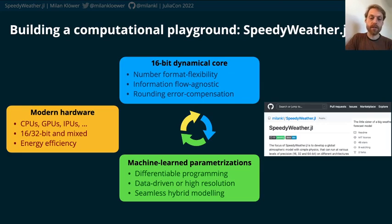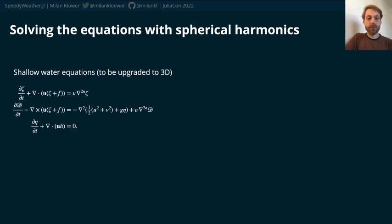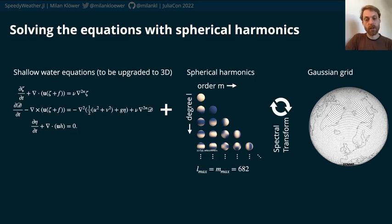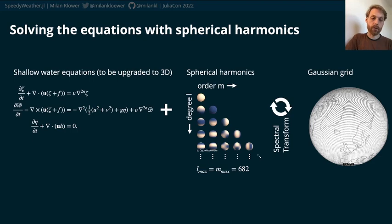At the moment, SpeedyWeather.jl solves the shallow water equations, which will soon be upgraded to 3D. We combine this with spherical harmonics — the spectral space — using these basis functions, going up to around 700 of them, which form a lower triangular matrix of complex coefficients. On every timestep you do a spectral transform between the spherical harmonic space and the Gaussian grid: spherical harmonics are used for the linear terms and the Gaussian grid for the nonlinear terms, and you transform back and forth to compute all your terms.